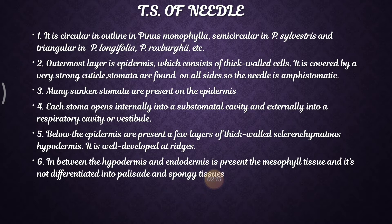Below the epidermis we find a few layers of thick-walled sclerenchymatous hypodermis, which is well developed at the ridges. In between the hypodermis and endodermis is present the mesophyll tissue, and it is not differentiated into palisade and spongy tissues — unlike in typical leaves where both palisade and spongy tissues are present as mesophyll.